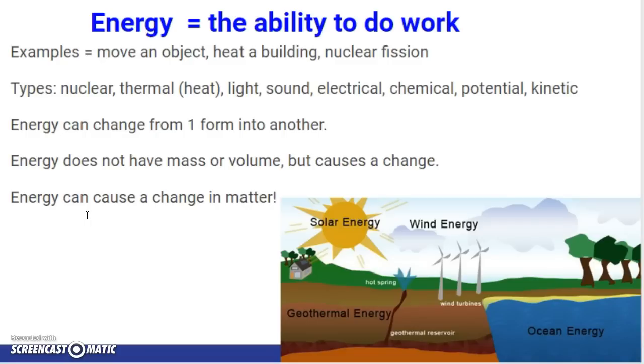Energy, the ability to do work. Examples: move an object, heat a building, nuclear fission. Types of energy include nuclear, thermal which is heat, light, sound, electrical, chemical, potential, kinetic. Energy can change from one form into another. Energy does not have mass or volume, so it's not matter.